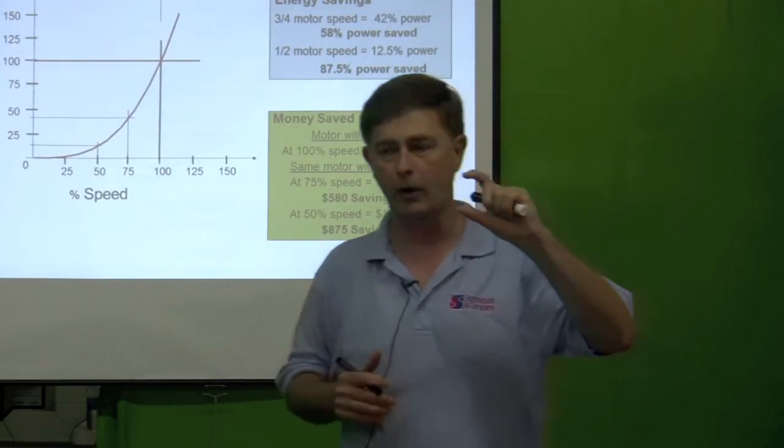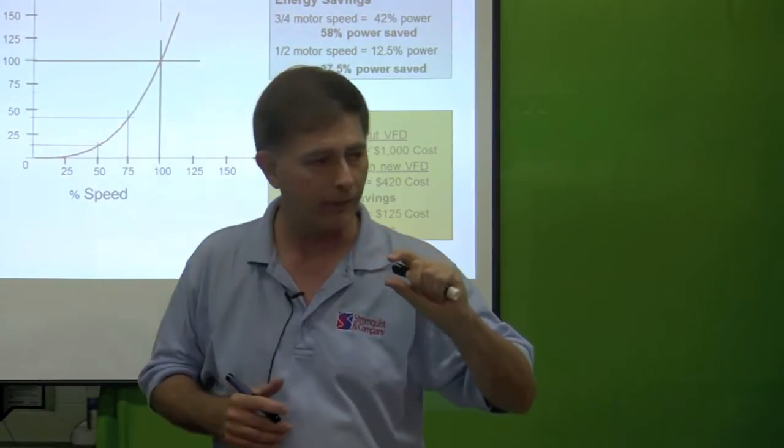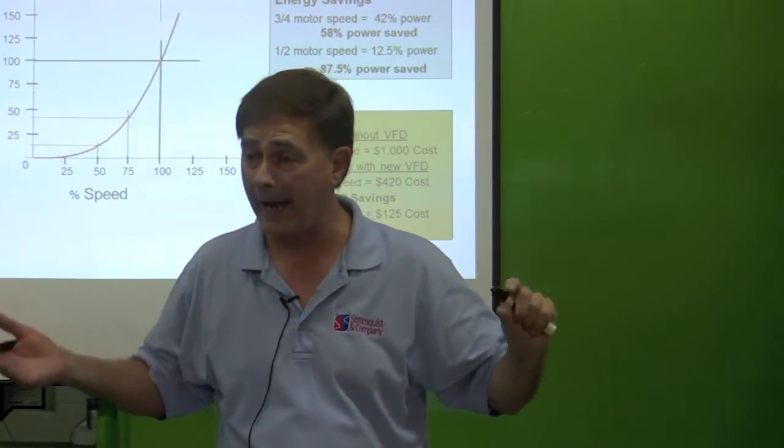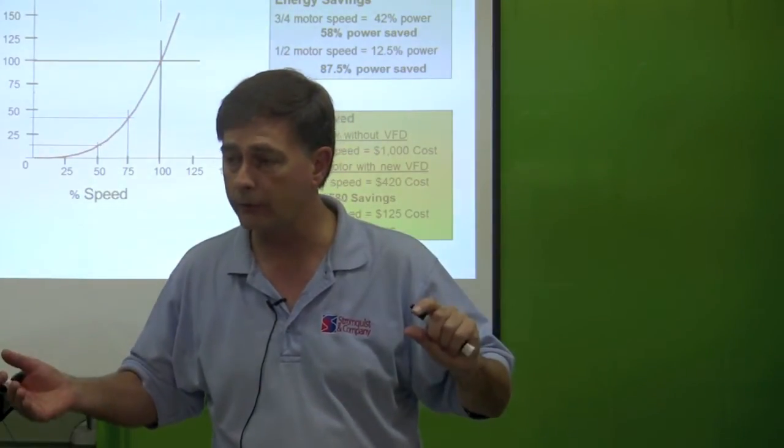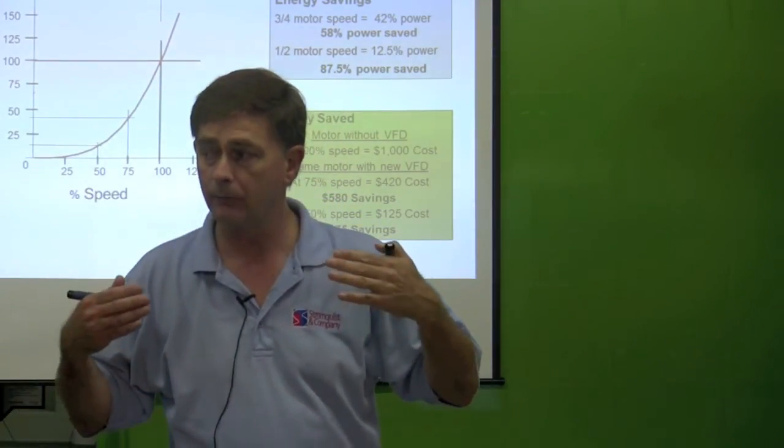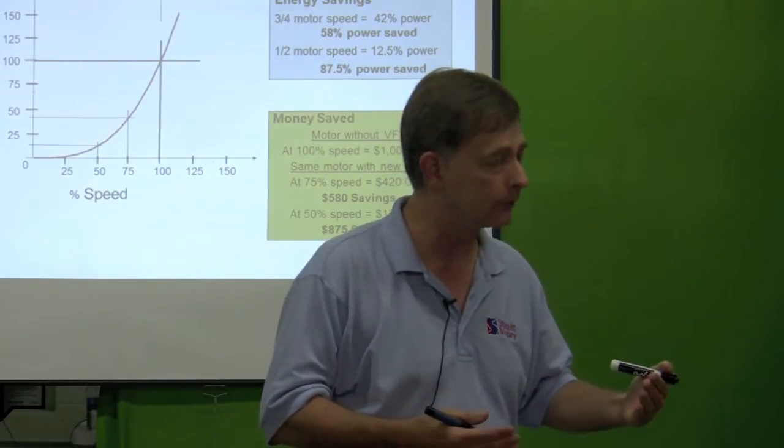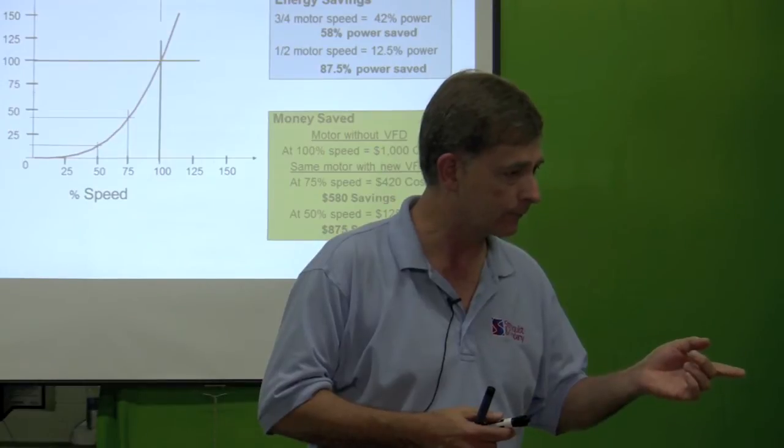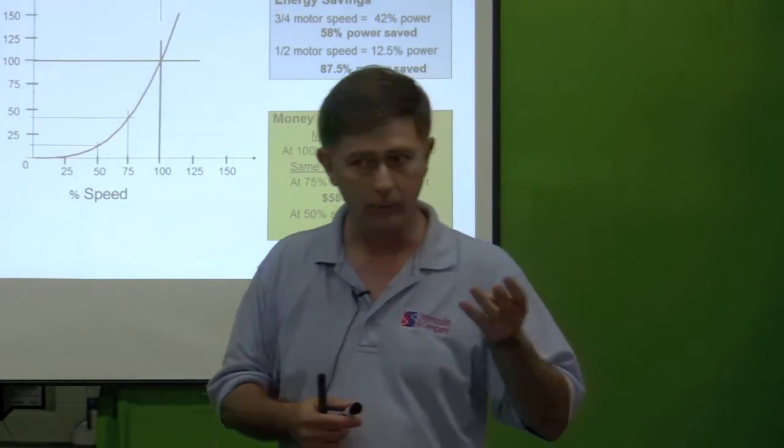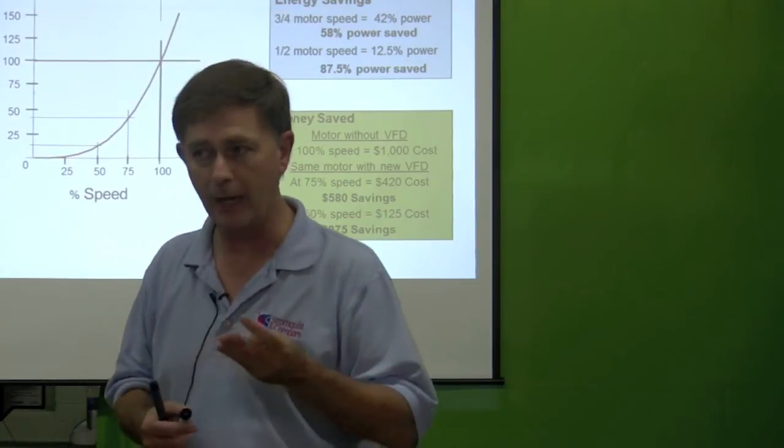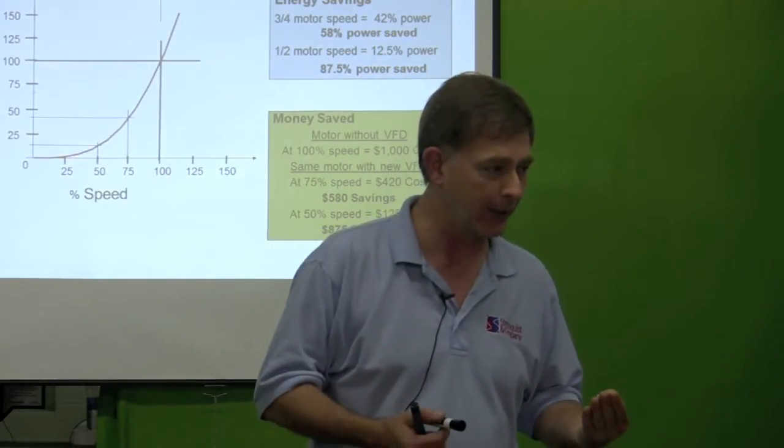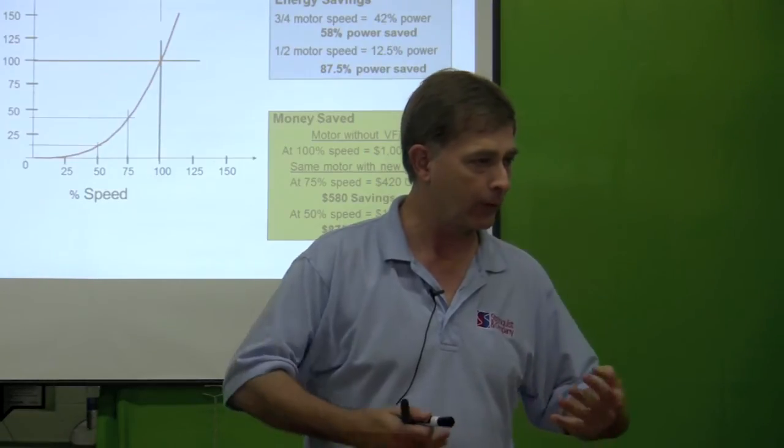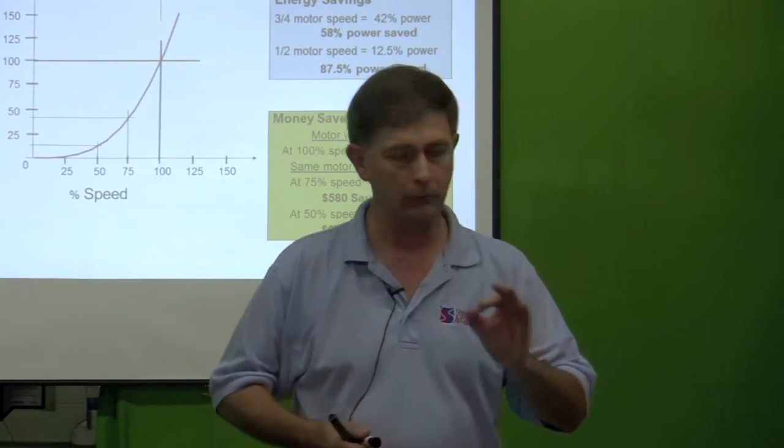Now, if you look up there, if you throttle it back 20% to 25%, you save half of the power that motor consumes. Most of our power that's generated is consumed by buildings, commercial buildings, moving water and air. And we've established that most of the time, we don't need all that water and air. So if you can throttle back now, for instance, 60 hertz is what a motor operates off.